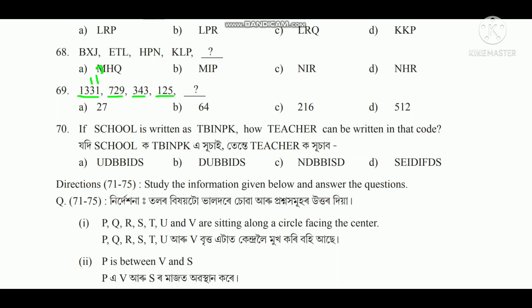I will talk about the question. It will be 9 cube, 7 cube which is 343, and it will be 5 cube.